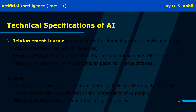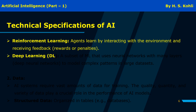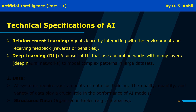Reinforcement learning: agents learn by interacting with the environment and receiving feedback in the form of rewards or penalties. Deep learning (DL) is a subset of ML that uses neural networks with many layers — deep neural networks — to model complex patterns in large datasets.